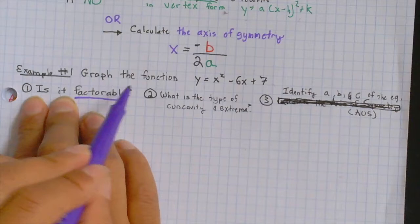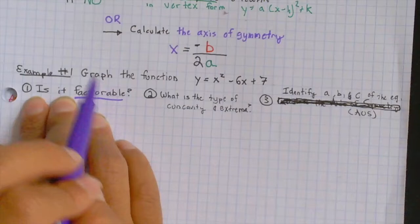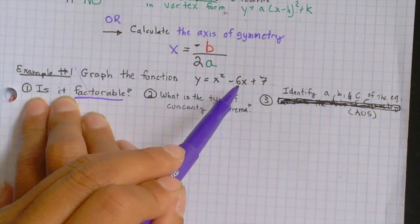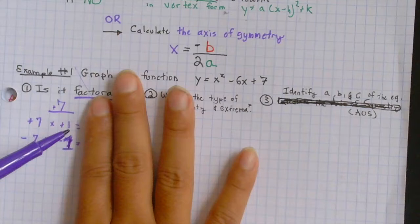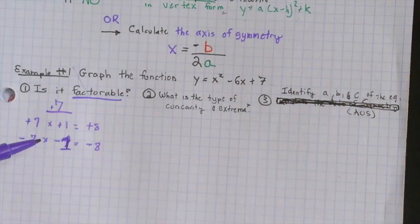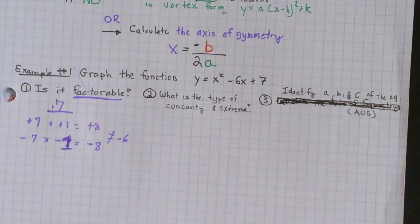Let's go into example 1. Graph the function y equals x squared minus 6x plus 7. The first thing we have to ask ourselves is, is this factorable? Are there two products of 7 that when added together gets us negative 6? Well, we know that 7 times 1 is a product of 7, and negative 7 times negative 1. However, when we add these values together, 7 plus 1 is positive 8, and negative 7 plus negative 1 is negative 8. So, neither of these equal to negative 6, which is that b value we need to equal to.